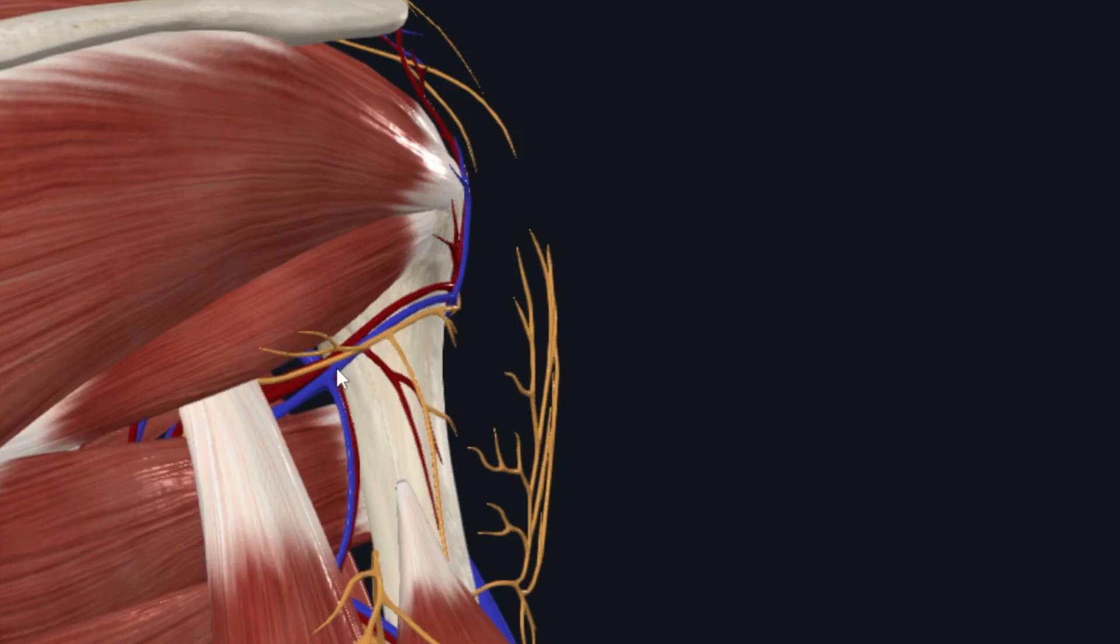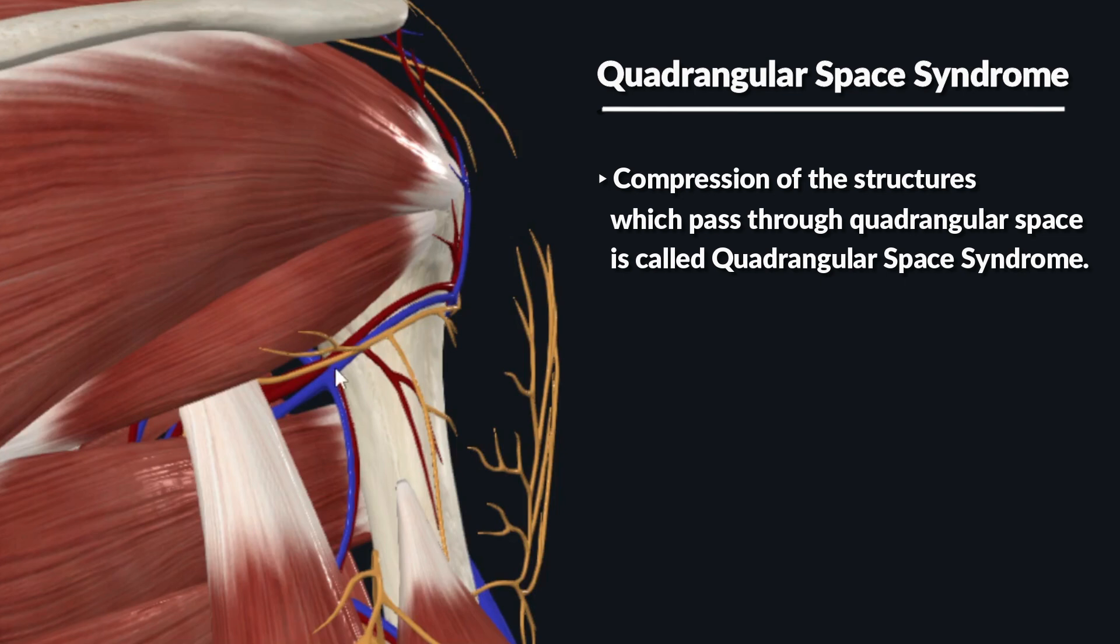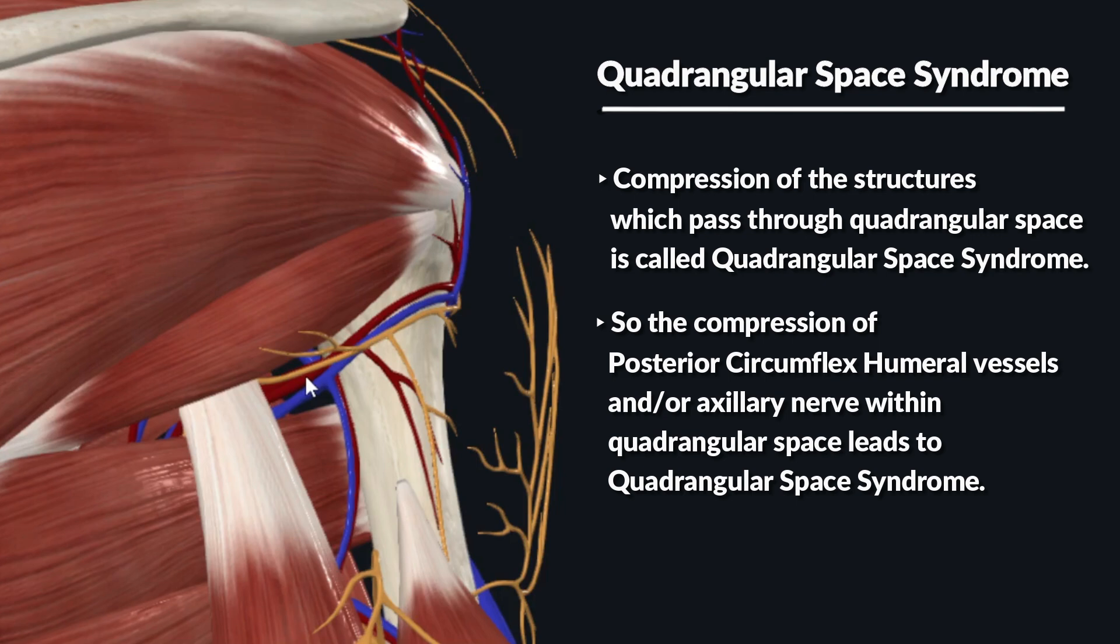Now it's easy for us to understand the second part of our tutorial, which is the quadrangular space syndrome. The quadrangular space syndrome is the compression of the posterior circumflex humeral vessels and/or the axillary nerve within the quadrangular space.